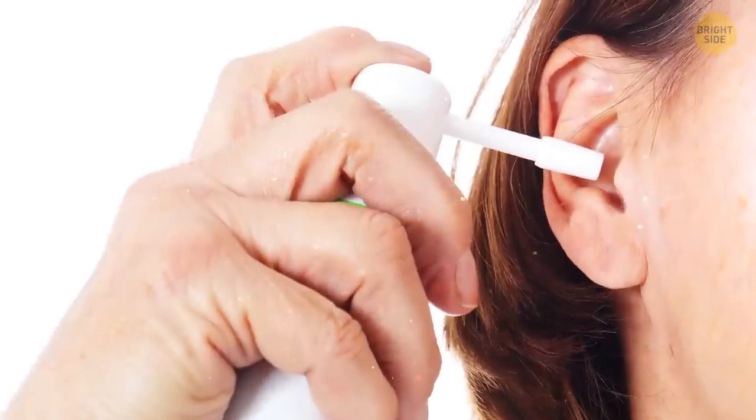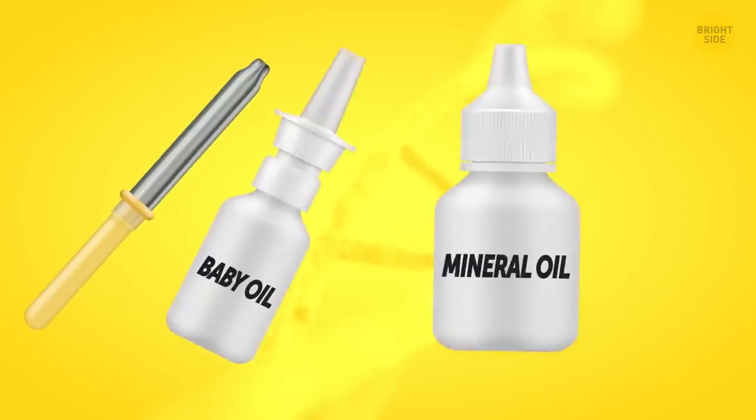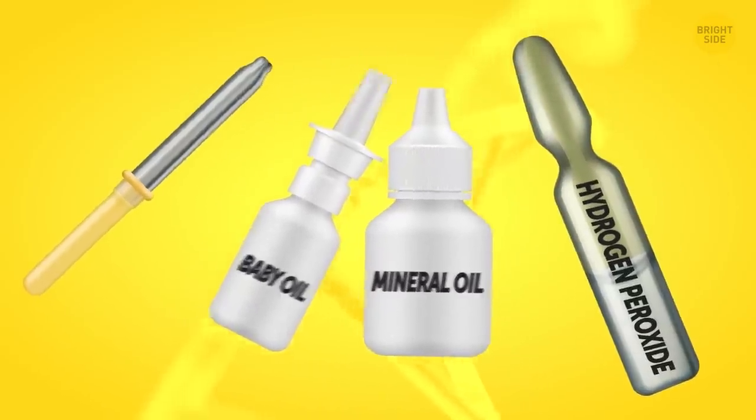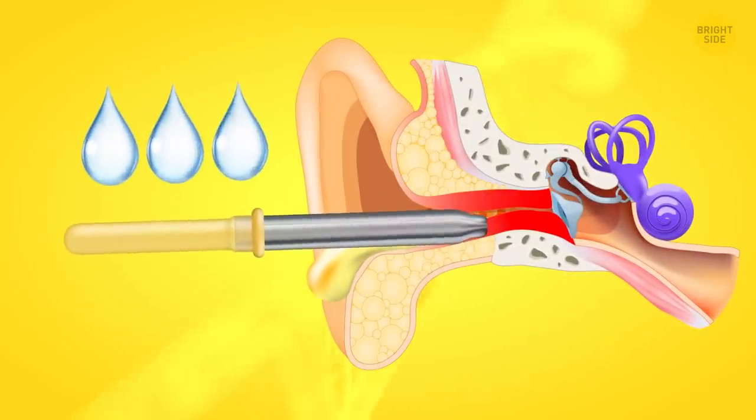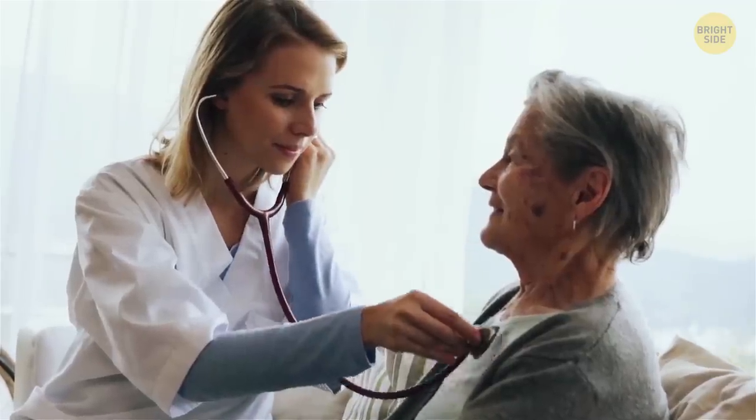To properly clean wax from your ears, take an eyedropper and fill it with baby oil, mineral oil, or hydrogen peroxide. Apply a few drops to either of your ears and go about your business. The wax will have to soften for a few days now.